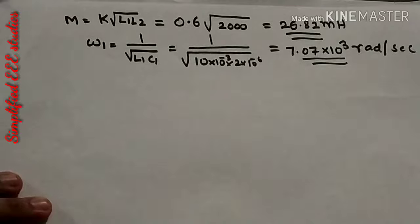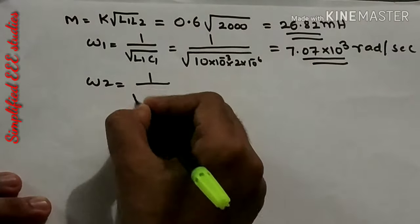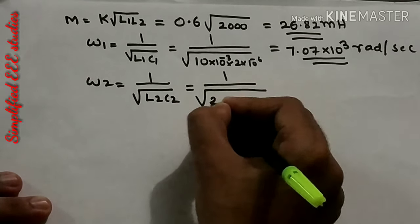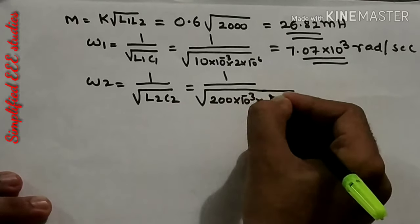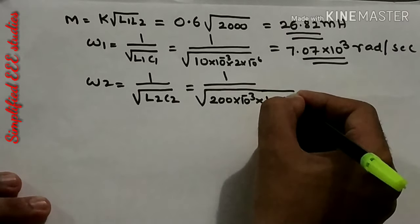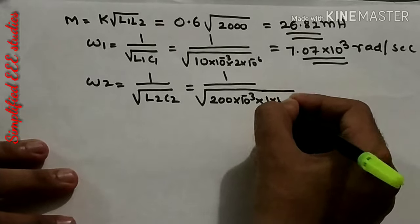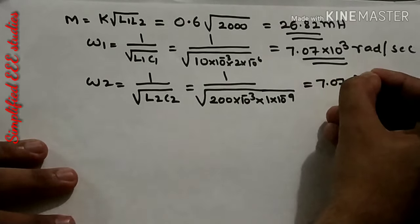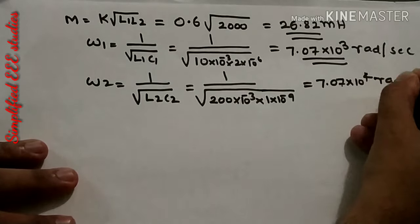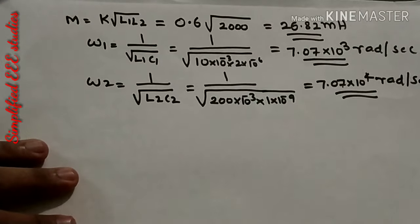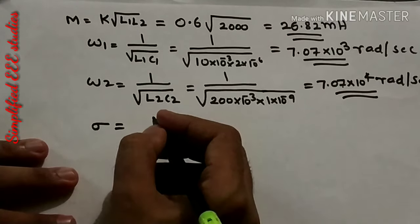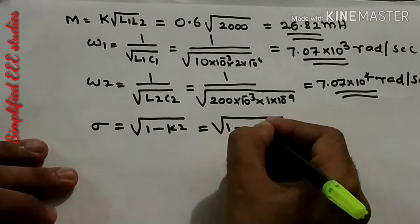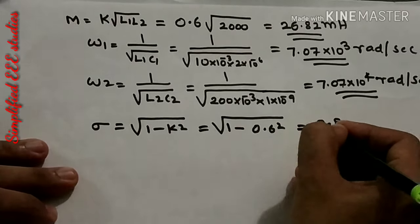Similarly, calculate Omega 2 using ω2 = 1 / √(L2 × C2). Substituting L2 = 200 × 10⁻³ henry and C2 = 1 × 10⁻⁹ farad, you get ω2 ≈ 7.07 × 10⁴ radians per second. Then calculate Sigma: σ = √(1 − K²) = √(1 − 0.6²) = 0.8.